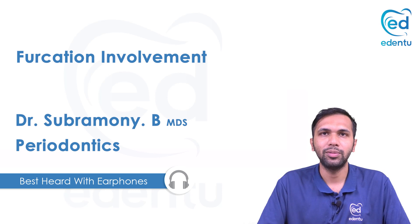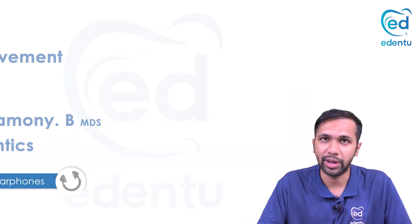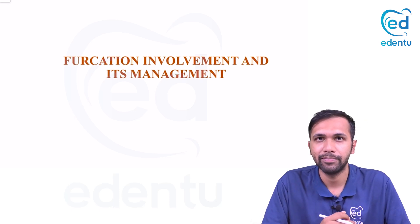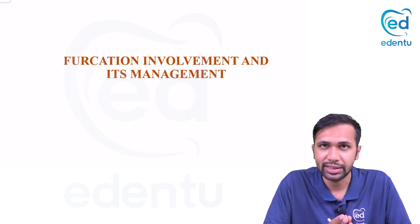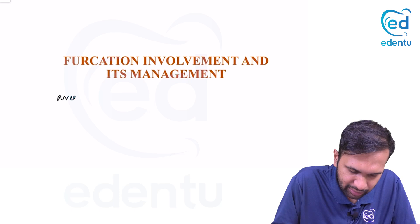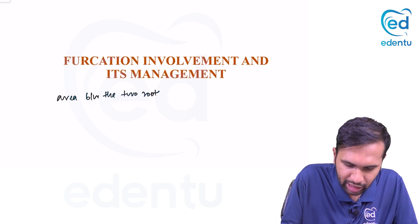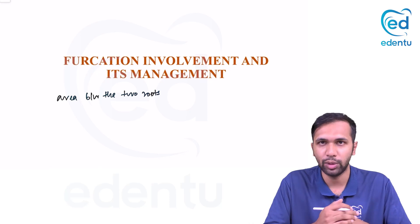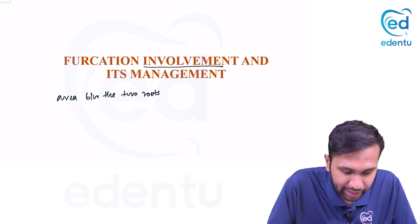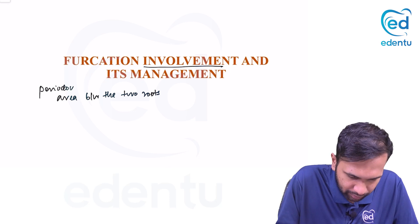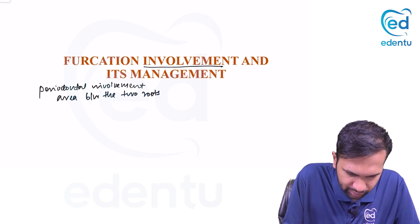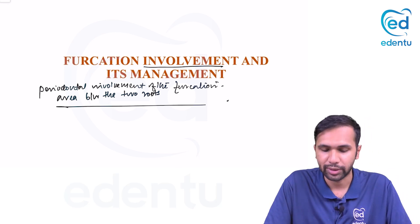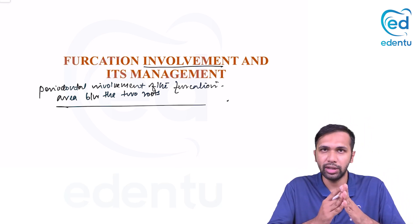In this video we will discuss furcation involvement and its management. Furcation in the simplest sense can be defined as the area between the roots. It is likely to occur in posterior dentition — it has to be in multi-rooted teeth. Furcation involvement is the periodontal involvement of the furcation.